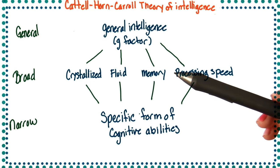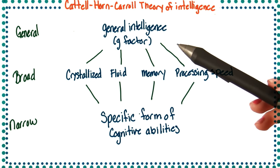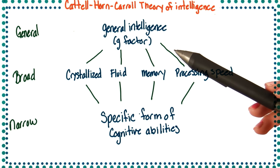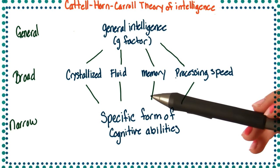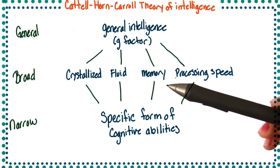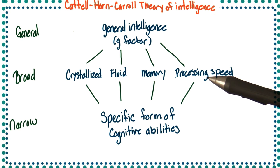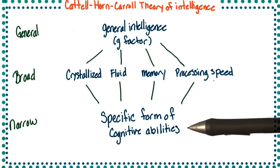The main idea here is that intelligence would be a hierarchy. We start with the general idea of intelligence, the g-factor, which is one intelligence. And then we go to a more broad level. This includes abilities such as crystallized and fluid intelligence, or memory and processing speed, among others. And then finally, from there, it narrows down into specific abilities for each one of these.